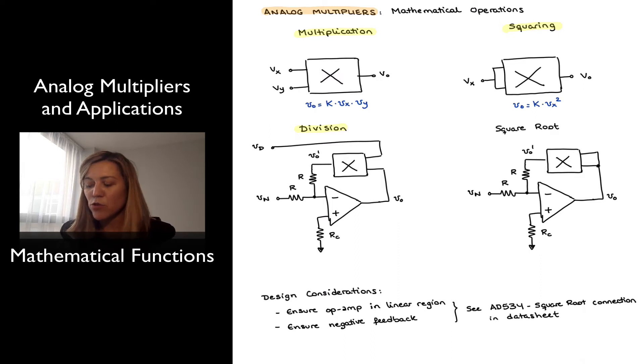And notice that in the case of division and square root, the analog multiplier is now connected in the negative feedback path of an op-amp circuit. And so my numerator is being applied in this case to the inverting input terminal, the resistor R.